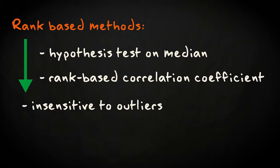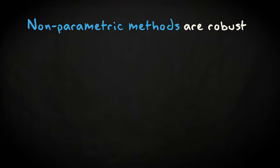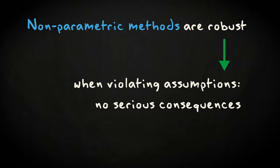If some assumptions for non-parametric techniques are not met, they are usually fairly robust to these violations. This means that the reported confidence intervals, or significance, may not be very accurate, but it won't be far off the real value.